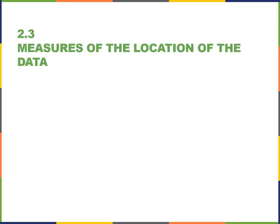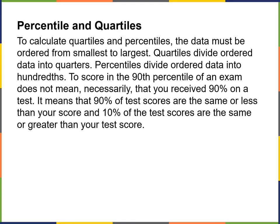Next, we're talking about measures of the location of the data. We have things called percentiles and quartiles. To calculate quartiles and percentiles, your data must be ordered from smallest to largest. Quartiles divide ordered data into quarters — your bottom 25%, next quarter, next quarter, and top quarter. Percentiles divide ordered data into hundredths. For example, if you want to score in the 90th percentile of an exam, that means 90% of the test scores are the same or less than your score, and 10% are the same or greater.